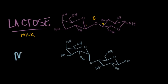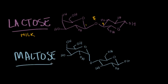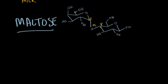Next up we have maltose, which is again a disaccharide, but this time made of two individual glucose units bound together by a 1,4 glycoside. As opposed to lactose, this one is actually alpha — the OR group, the second carbohydrate functioning as the OR group, is in the trans position with respect to the first carbohydrate's C6 carbon. So this is an alpha 1,4 glycosidic linkage binding together two glucose units.